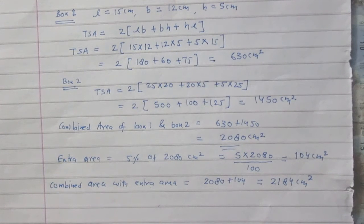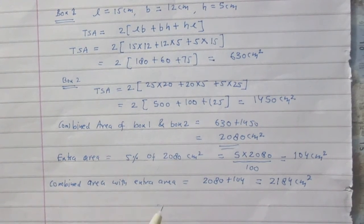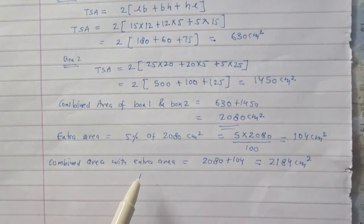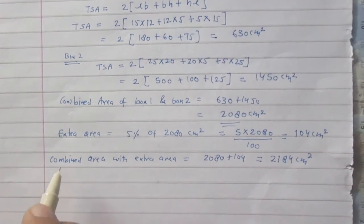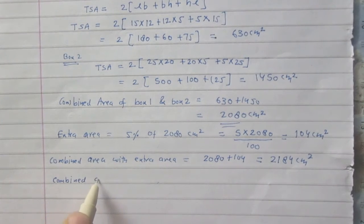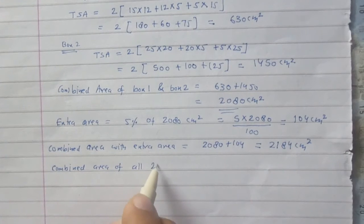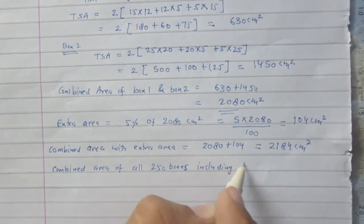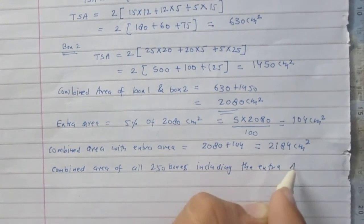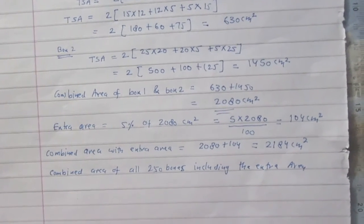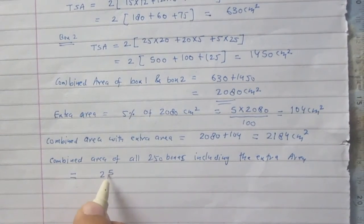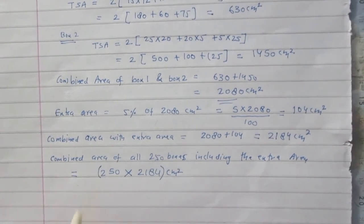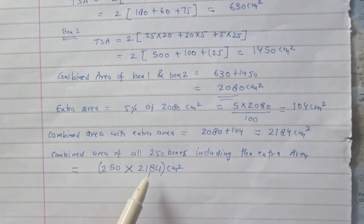We have found the combined area of two individual boxes including extra area. Since 250 boxes of each kind are required, the combined area of all 250 boxes including the extra area is 250 × 2184 cm². This is the total area of cardboard required.